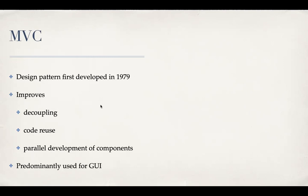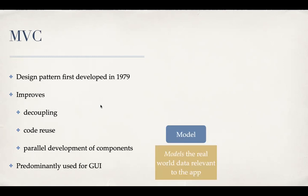MVC has three broad components: model, view, and controller. The model is what models the real-world data relevant to your project. For example, a database of students — if it's a student-related app, you have a list of students in a class, and the Java classes that model that information, say a class that has a name as a string, GPA as a double, phone number as a string, and things like that. So that is your model.